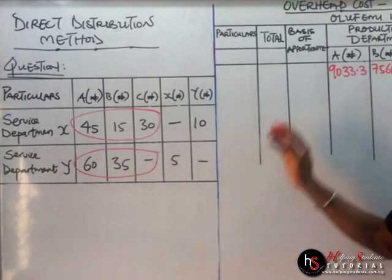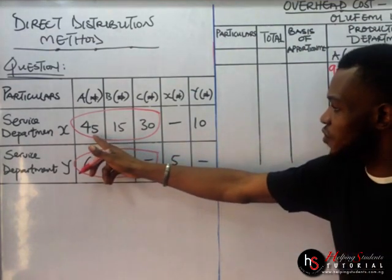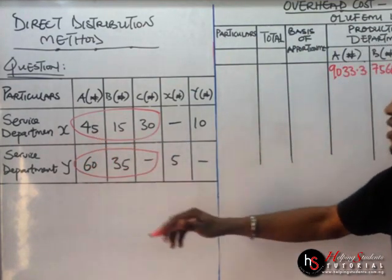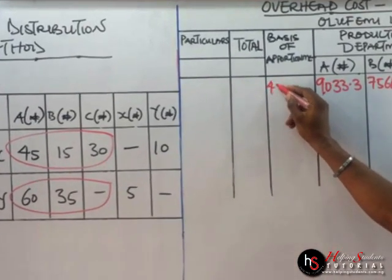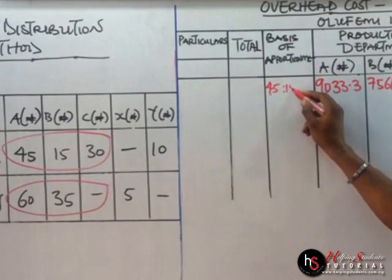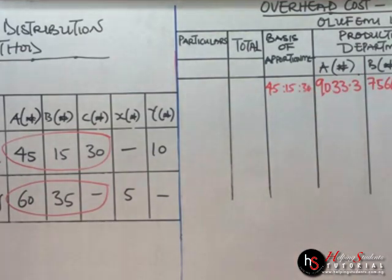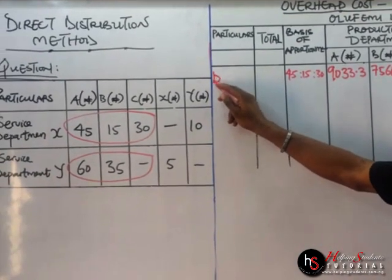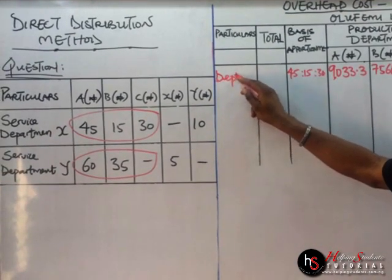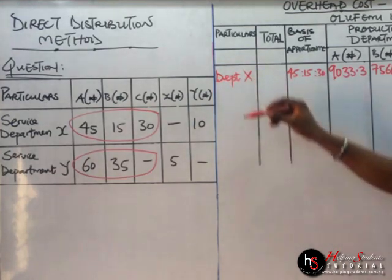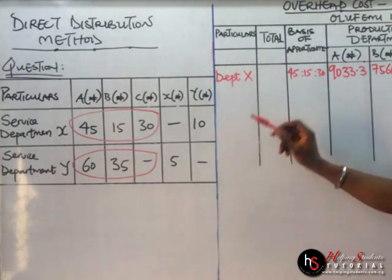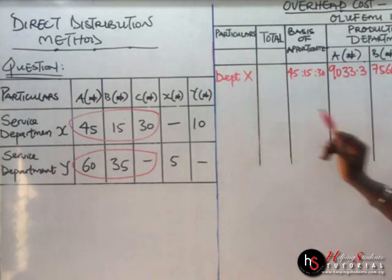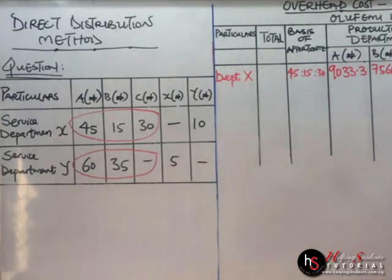Under the basis of apportionment, we are going to have 45, 15, and 30 — that is, 45 ratio 15 ratio 30. When we come here, we'll have Department X. Remember, Department X is the first department before Department Y. So we're going to have Department X, then total. To determine what value we're going to have here, it goes this way — let us come back to this table.